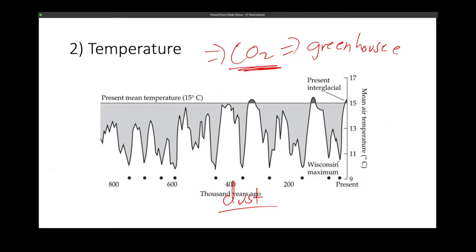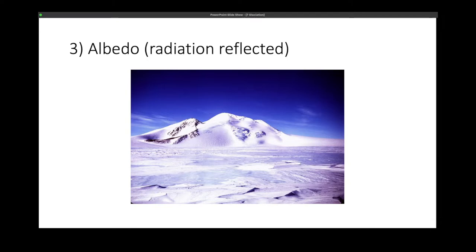Another factor, aside from CO2, is dust — for example, volcanic dust that may have increased the covering of the atmosphere and increased cooling during glacial times. All of this may have further affected the natural orbital cycle patterns that the Milanković cycles predict.